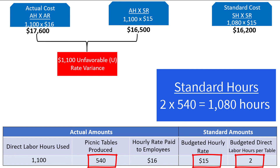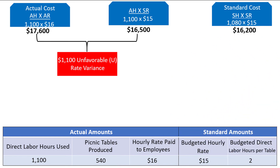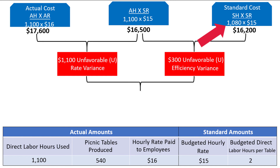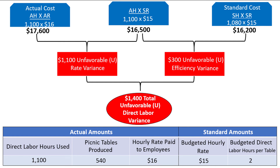We are trying to calculate the efficiency variance now, which relates to the hours used, meaning we must hold the rate constant. Both values multiply by the standard rate, keeping rate constant, but the hours change from actual to standard. The difference between these two values is the direct labor efficiency variance, which comes to $300 unfavorable. Why unfavorable? Because the company used 1,100 hours of direct labor when the budget suggests that only 1,080 hours should have been used. $1,100 plus $300 is equal to $1,400 of total direct labor variance, which is unfavorable as each of the individual variances were also unfavorable.